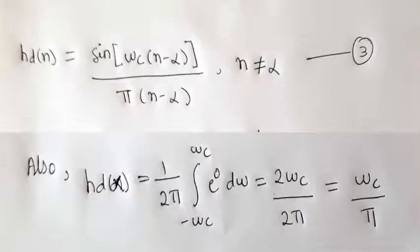HD of N for the case where N not equals to alpha can be found out using this formula.